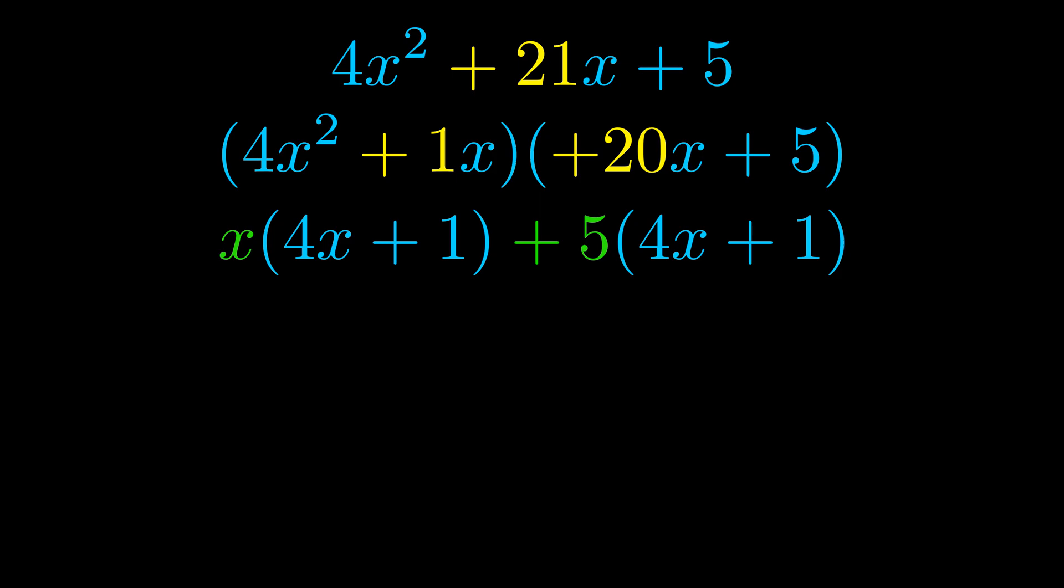Notice also how what remains inside of the parentheses is the same in both cases. The blue values are the same. Those blue values will become one of our factors and we will combine the two green values, the GCFs that we pulled out to get the other one. And that is our fully factored equation.